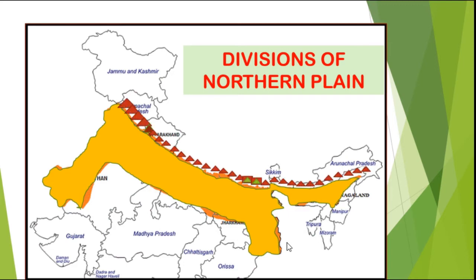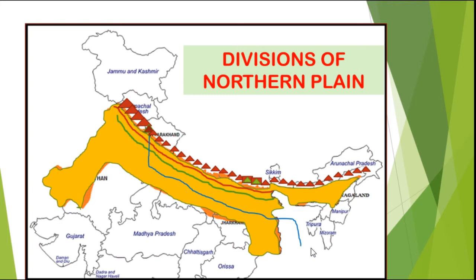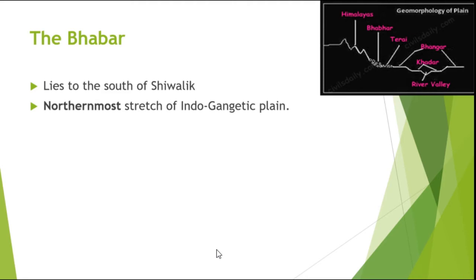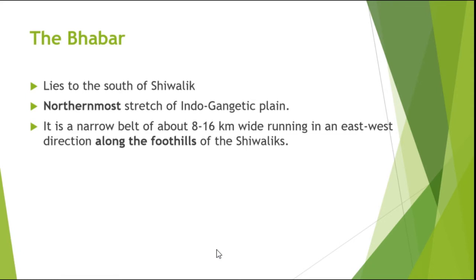Here you can see the northern mountain system, the Himalayas. The part of the northern plain which lies very close to the Himalayas or the Shivaliks is the Babar. Further south of the Babar lies the Tarai Tract. The other two divisions, Khadar and Bangar, are going to be explained by taking the example of River Ganga. The floodplain along the river banks is the Khadar, and the area far away from the floodplains is the Bhangar. Now let's study each one in detail. Babar lies to the south of the Shivalik. It is the northernmost stretch of the Indo-Gangetic Plain, a narrow belt of about 8 to 16 km wide running in an east-west direction along the foothills of the Shivaliks.